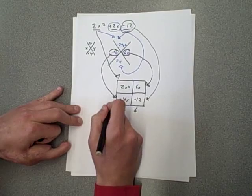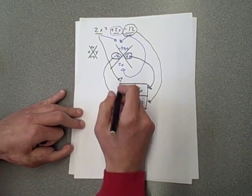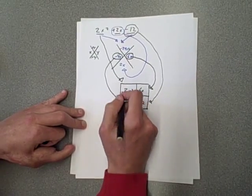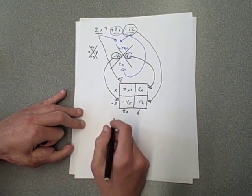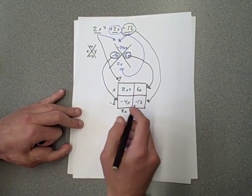2 times negative 2 is negative 4x. And 2 times 1, or 1x, is equal to 2x squared. So now we have the sides of our generic rectangle of our box.